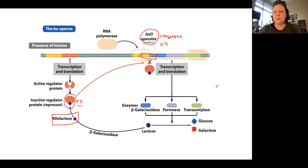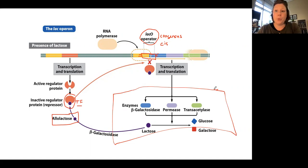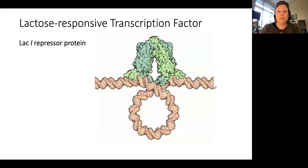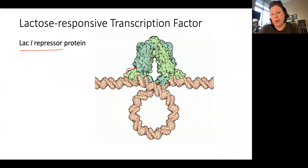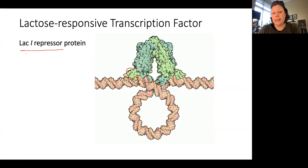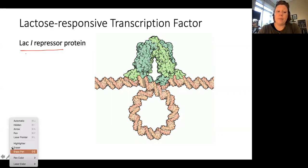We know that expression of these lactose-related genes turns on when there's lactose present in the environment. Here's a structural model of what scientists believe the lac I repressor protein looks like when it binds to DNA. You can see it has four DNA binding domains. Because of the way this protein interacts with DNA, scientists believe there is a loop formed in the DNA when this repressor is bound to it, and that loop prevents RNA polymerase from making a new transcript.